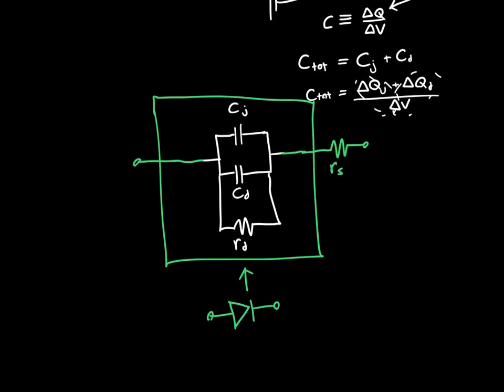And RS is typically in the range of a few ohms. So you might want to ignore it. The junction capacitance and the diffusion capacitance tend to be in the nanofarad range.